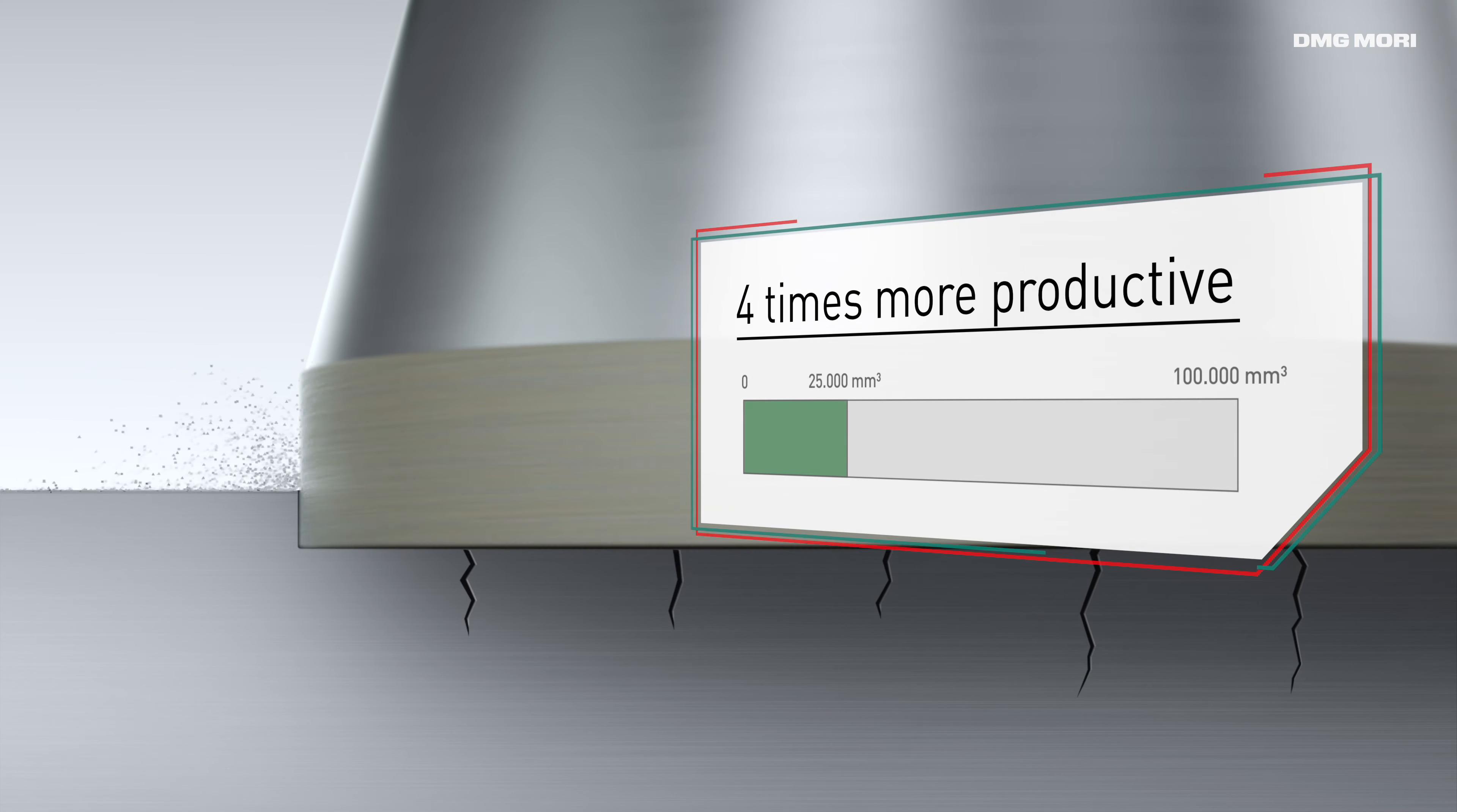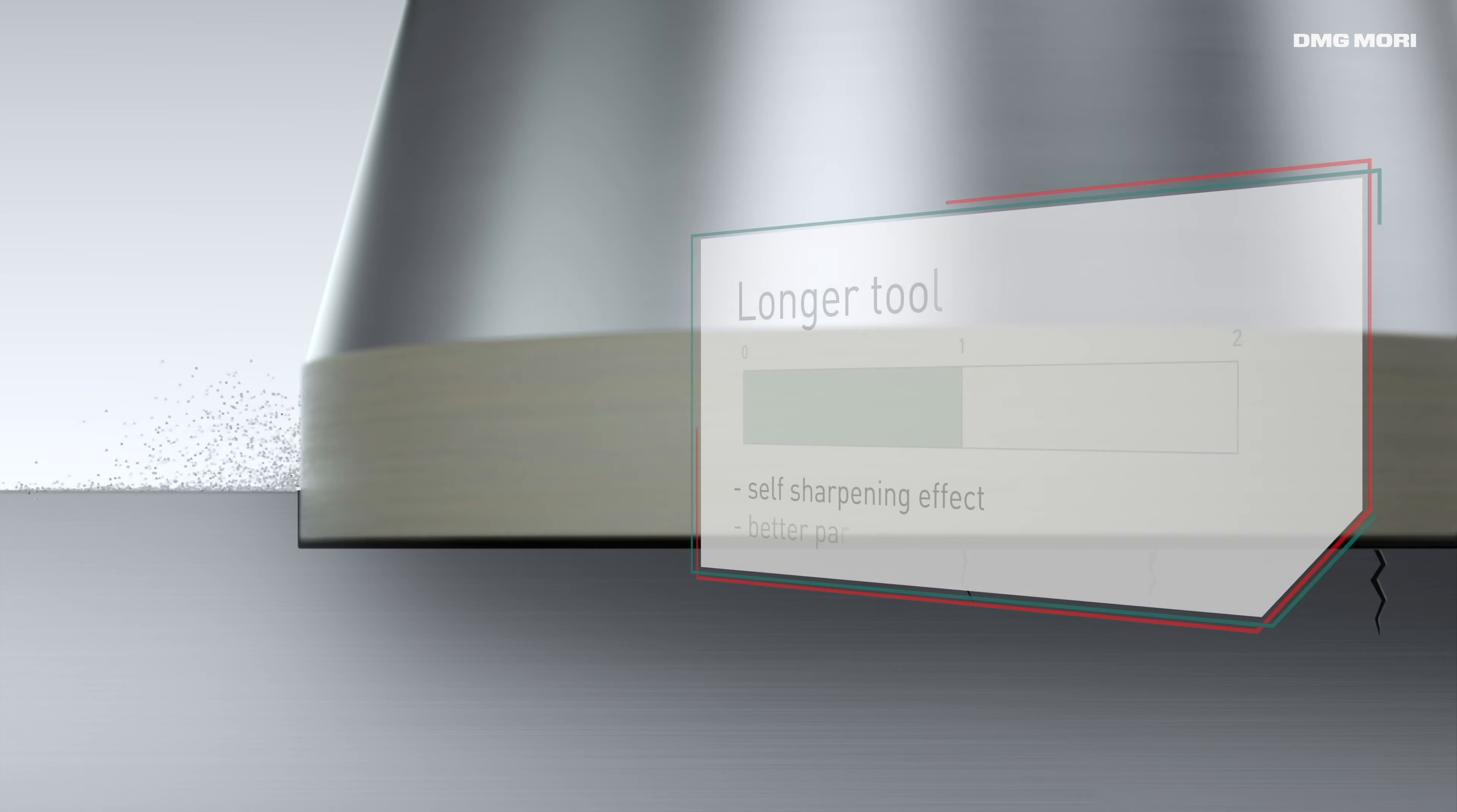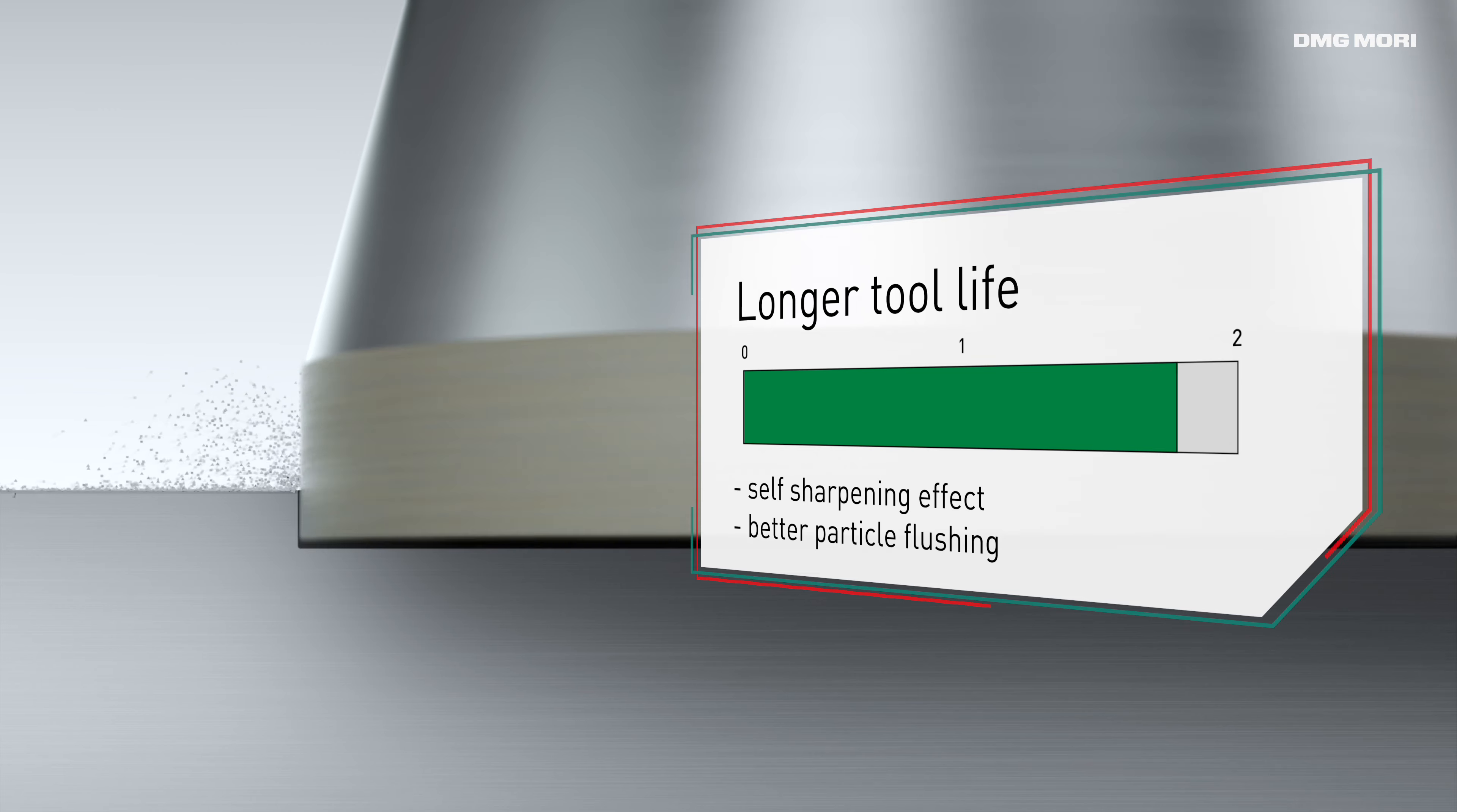productivity can be increased up to 4 times. The self-sharpening effect of the micro splinters in the diamond grains enables longer cutting capability of the tools.